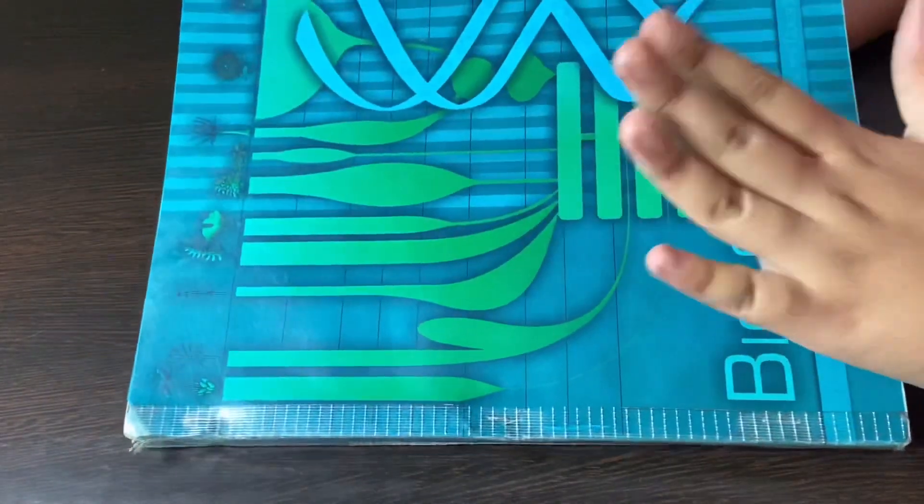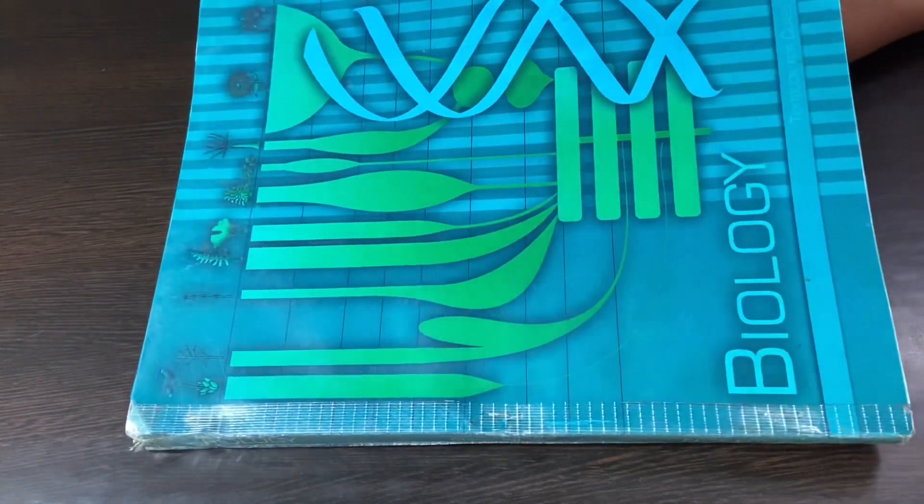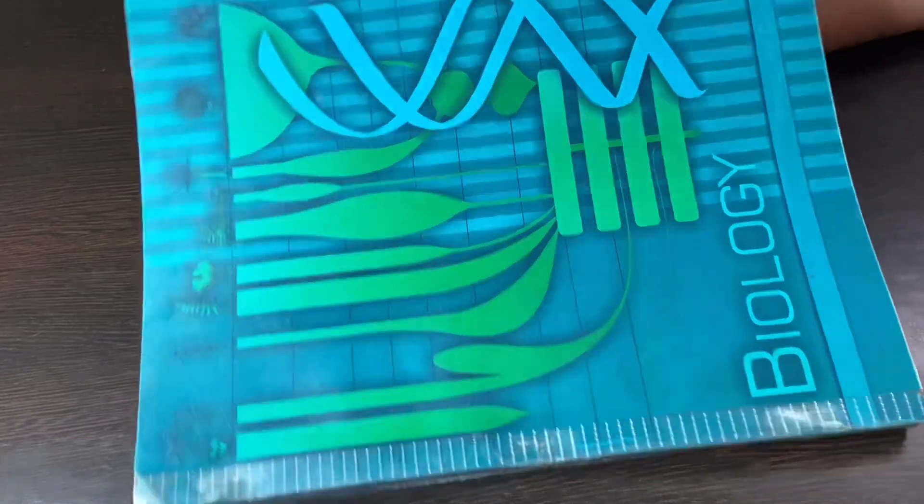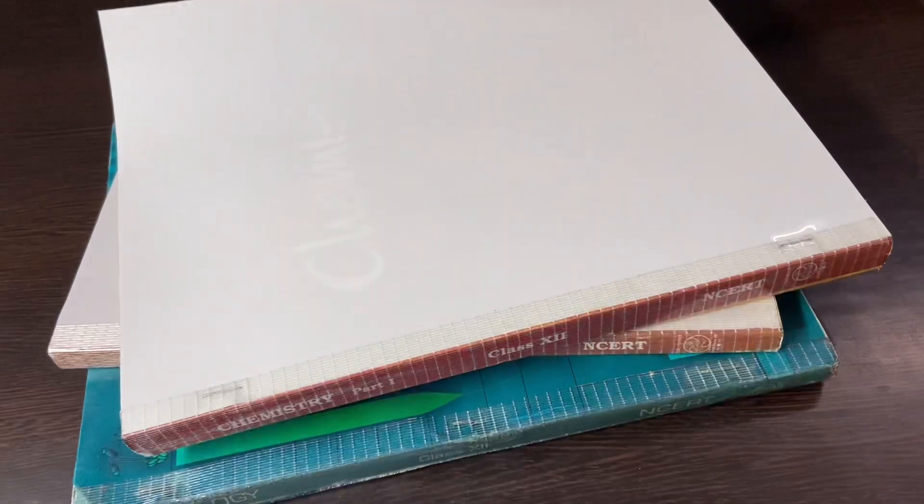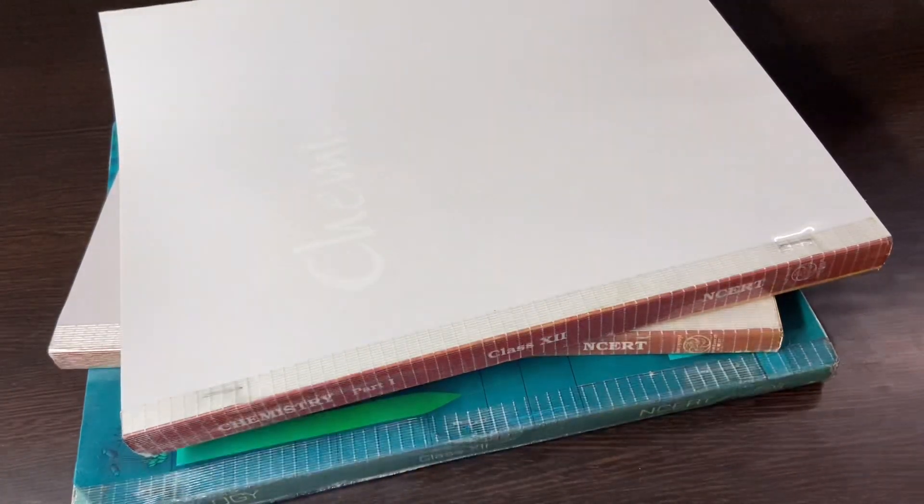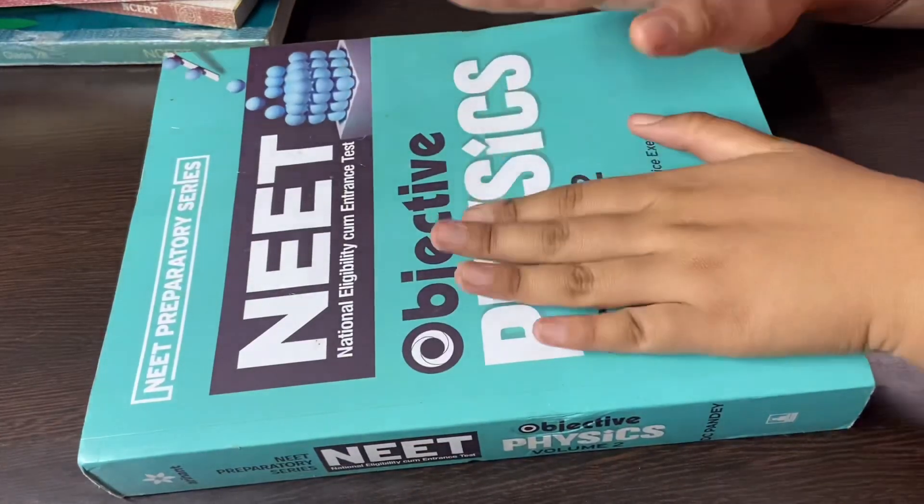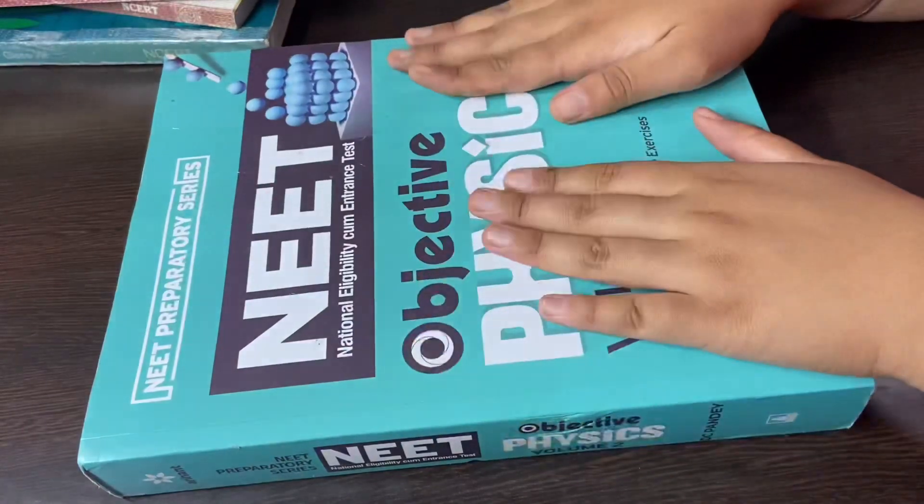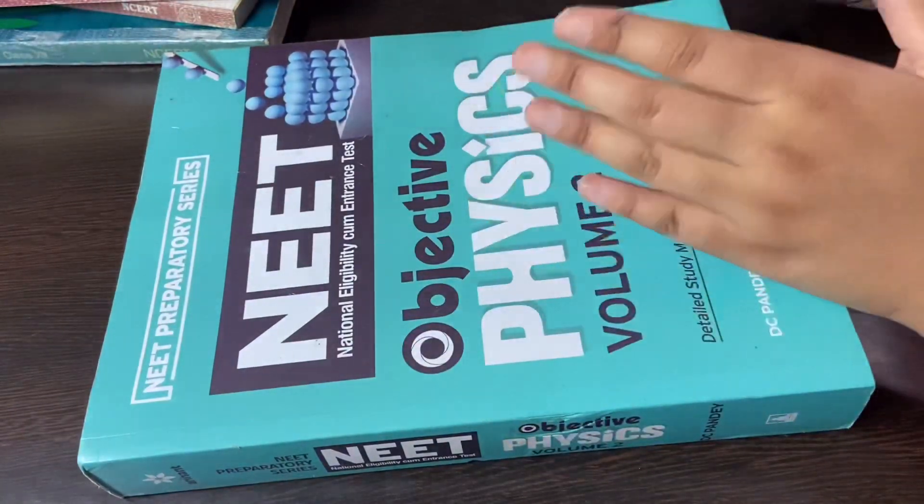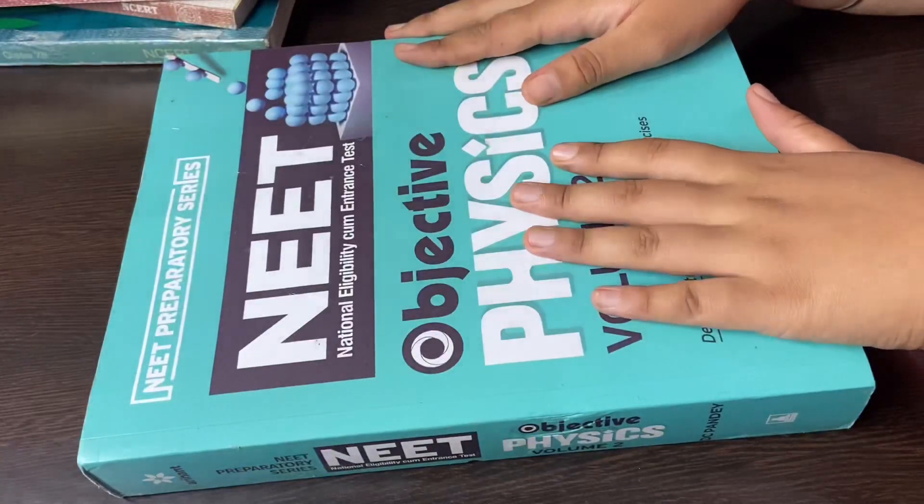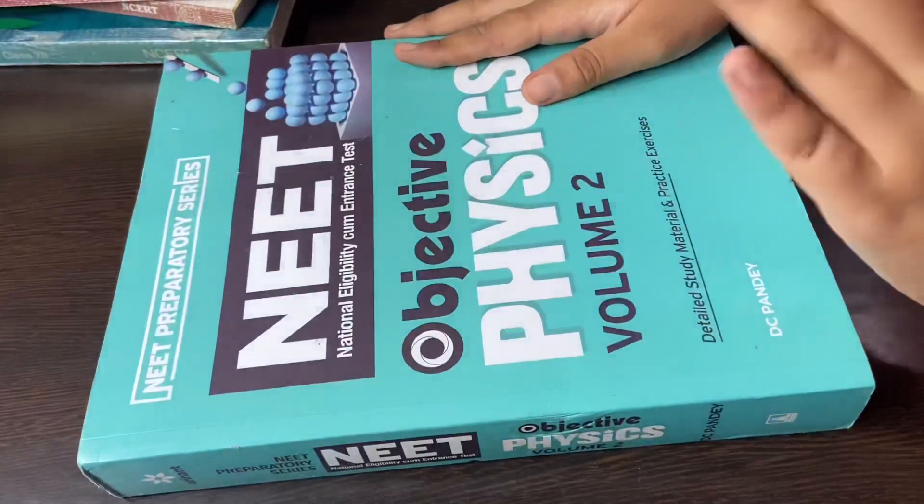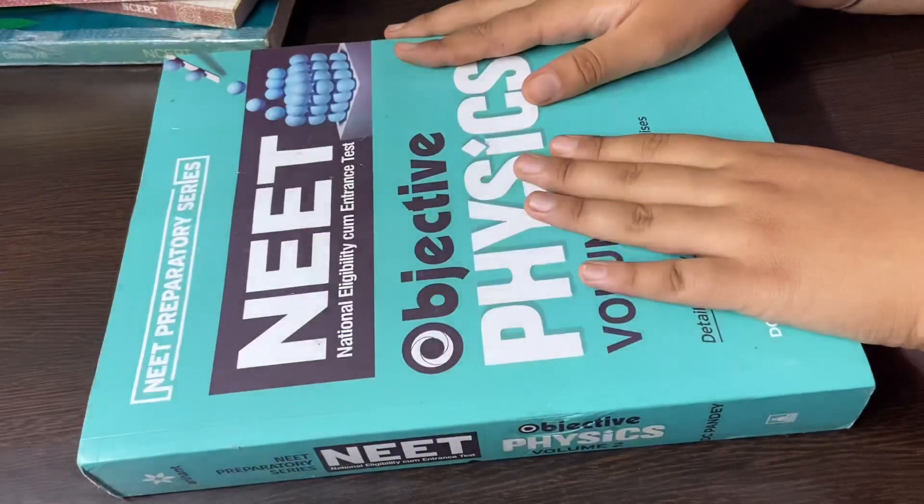I got Bio NCERTs, Chemistry NCERTs, and Physics NCERTs too. Next, I got DC Pandey. As you all know I solve DC Pandey, so I got Volume 2 for my 12th grade. It's a great book - if you guys want any book recommendation for physics, go for it.